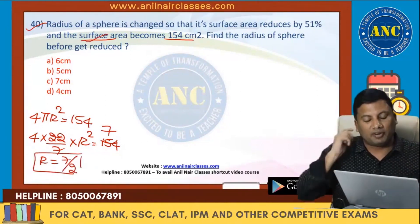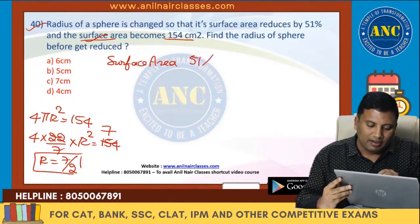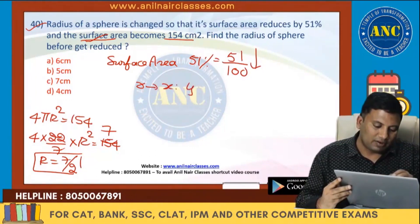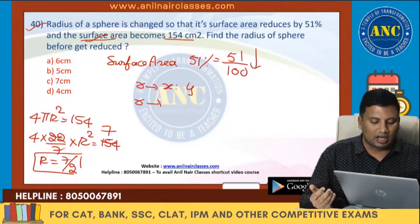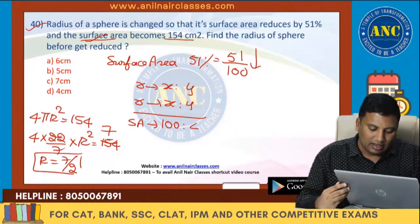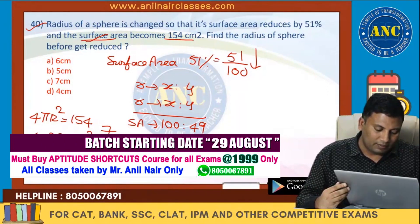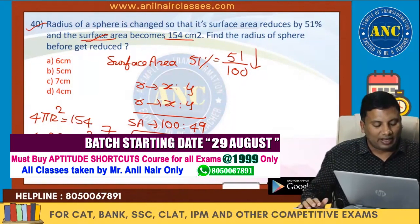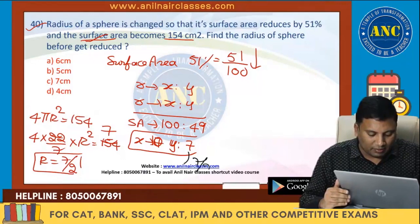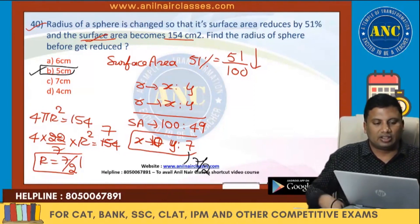Continuing from the last problem: surface area reduces by 51%. Initial surface area = 100, final = 49. Since surface area is πr², x (initial radius) = 10 and y (final radius) = 7. But 7 here corresponds to 7/2, so the scale factor is 1/2. Therefore initial radius = 10 × (1/2) = 5 centimeters.